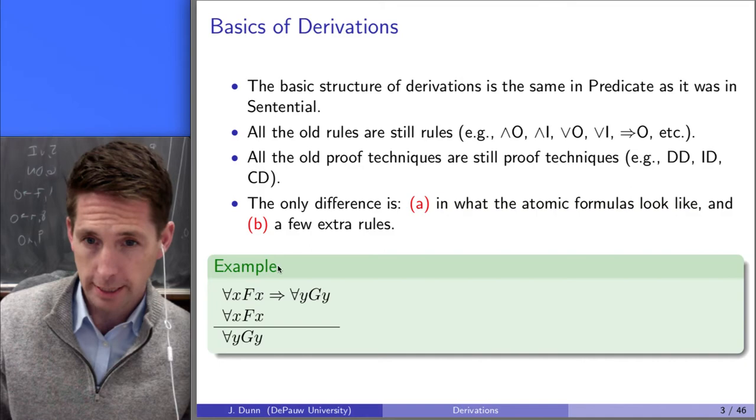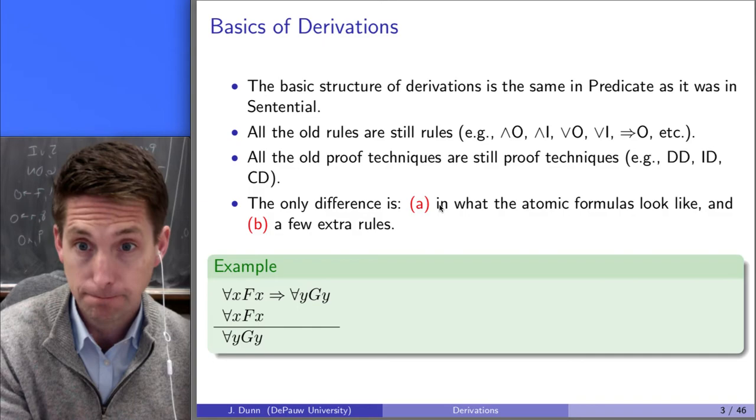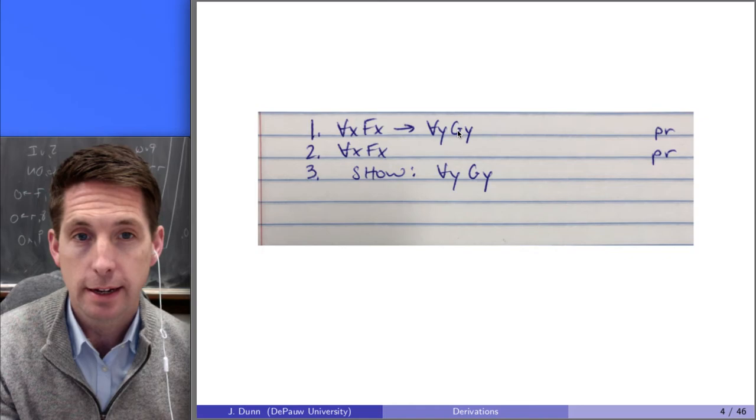If you were going to try to provide a derivation for this, you could do so in exactly the way that we did in sentential. That is, you don't need any new rules to show that this is valid. And what I mean by that is illustrated here. So here we've got the premise written down: if everything is F, then everything is G. Everything is F, and we're trying to show that everything is G.